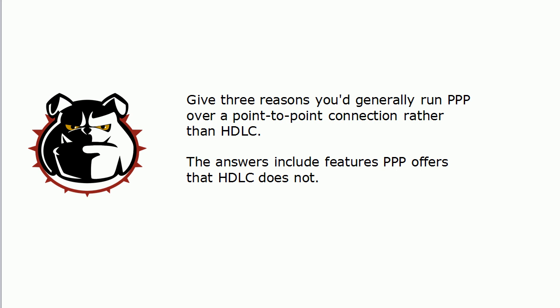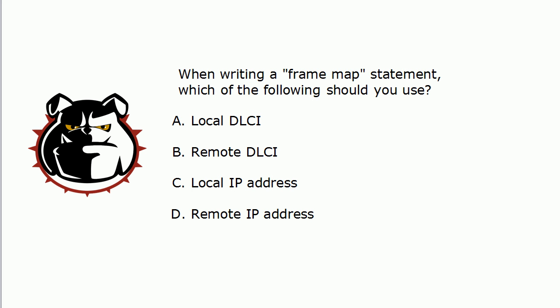Three reasons you will usually run PPP — the options PPP offers that HDLC does not: data compression options, multi-link, encryption options, and dialer callback, which is not as big a deal as it used to be. Also keep in mind that this version of HDLC — the default encapsulation on a Cisco serial interface — is Cisco proprietary. So if you have non-Cisco devices in your network or part of that communication, you would need to use PPP for that reason as well.